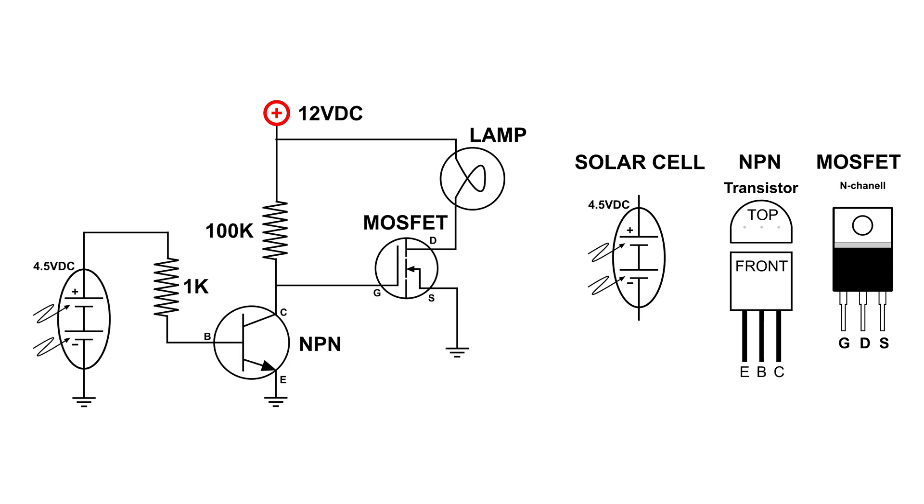Now, when I cover up that solar panel completely, the light comes on. And that's because that NPN transistor no longer has a positive voltage on the base, and the NPN transistor is wide open.